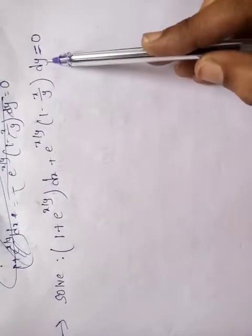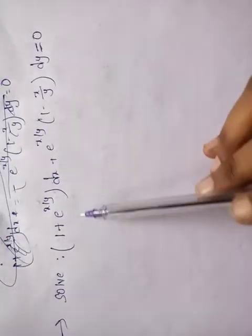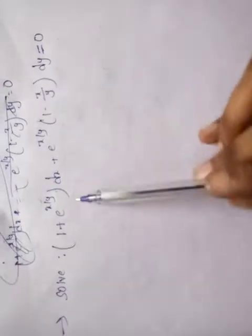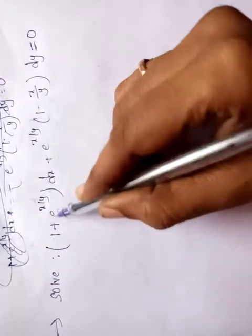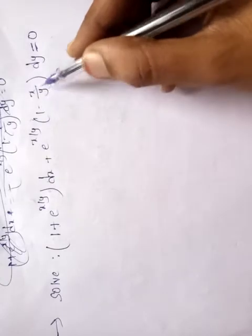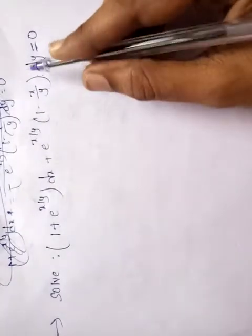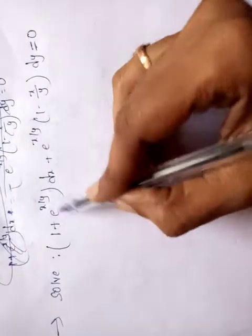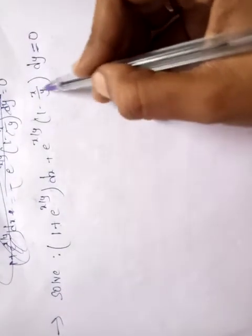Hi students, in this video I am explaining important questions in differential equations. The first problem is: solve (1 + e^(x/y))dx + e^(x/y) * (1 - x/y)dy = 0. First we have to change to dy/dx or dx/dy form. Here we have e^(x/y), x/y terms throughout the equation.